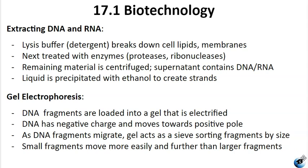In order to study nucleic acids it's first necessary to isolate and extract them from the cells. When extracting DNA or RNA the process involves several steps. First you need a lysis buffer, which is usually mostly detergent and water, and it's used to break down the cell lipids and membranes. Then the sample is treated with enzymes like proteases and ribonucleases. After that the remaining material undergoes centrifugation, and the supernatant — the liquid part — has the DNA or RNA in it. Then the supernatant is subjected to ethanol precipitation to purify and make the DNA ready for manipulation.